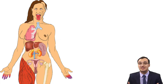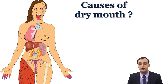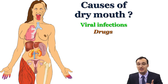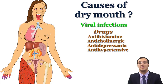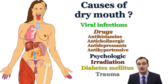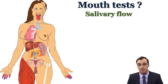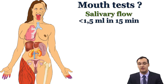Is there any other disease or cause of dry mouth? Yes — viral infections, drugs like antihistamines, anticholinergics, antidepressants, and antihypertensives, psychological factors, irradiation, diabetes mellitus, or just trauma. For testing dry mouth, we can measure saliva production, which will be low in Sjogren's syndrome — less than 1.5 milliliters in 15 minutes. We can also use techniques like salivary scintigraphy or sialography.